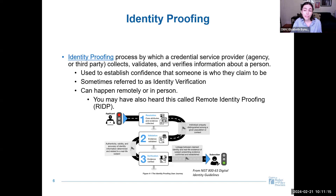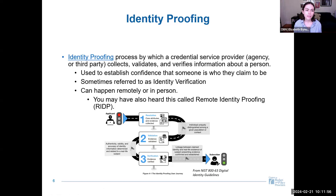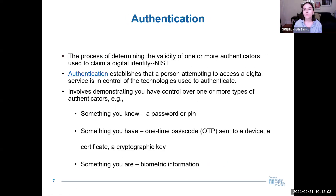Identity proofing is usually happening when someone accesses a service or system for the first time or is enrolling in that process. You might have also seen this referred to as identity verification, but identity proofing is technically a three-step process and verification is just one piece of that. You may have also heard the term remote identity proofing. We'll talk more about how identity proofing shows up in public benefits applications in a moment.